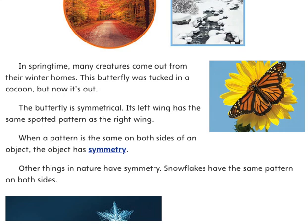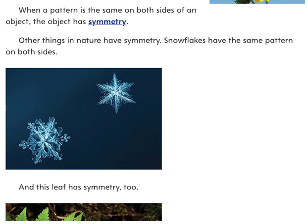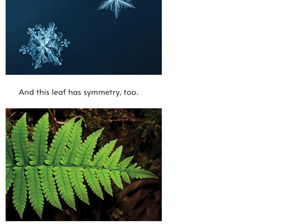In springtime, many creatures come out from their winter homes. This butterfly was tucked in a cocoon, but now it's out. The butterfly is symmetrical — its left wing has the same spotted pattern as the right wing. When a pattern is the same on both sides of an object, the object has symmetry. Other things in nature have symmetry too: snowflakes have the same pattern on both sides, and this leaf has symmetry too.